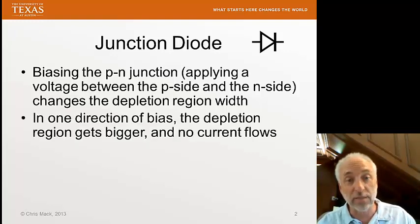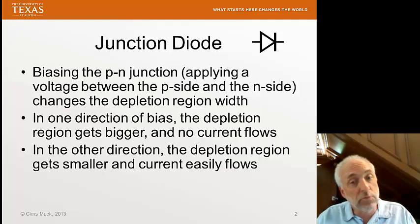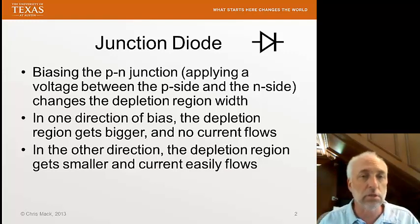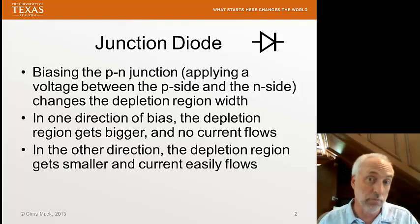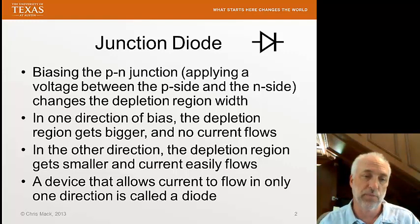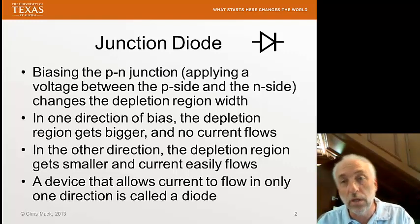In one direction of bias, the depletion region is going to get bigger and no current is going to flow. In the other direction of bias, the depletion region is going to get narrower, smaller, and the current is going to be able to flow quite easily. This is the definition of what a diode is. A diode is a device that allows current to flow in one direction, but not the other.